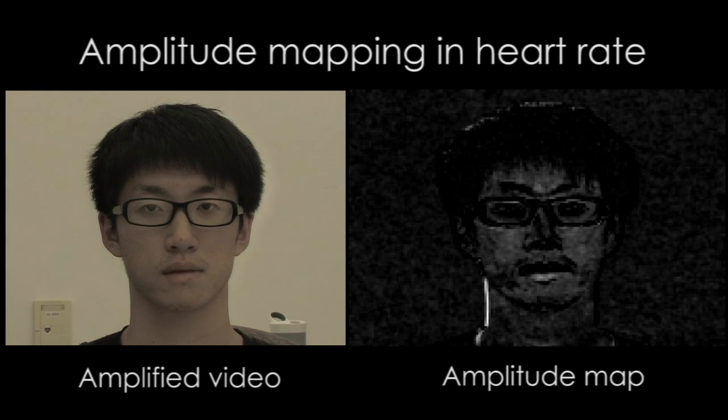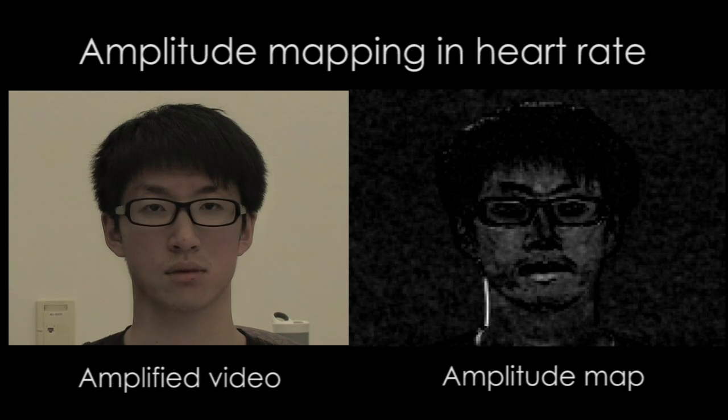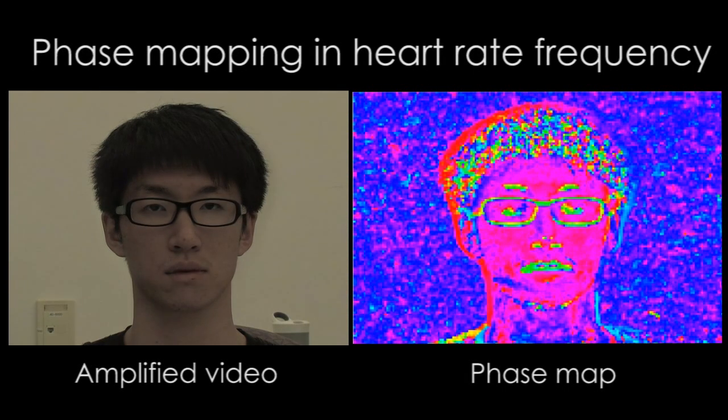We obtain the amplitude map by calculating the magnitude for each position after the Fourier transformation. The intensity of each pixel in the amplitude map represents the strength of color variation in that location of the video. A high intensity implies an abundance of blood vessels.